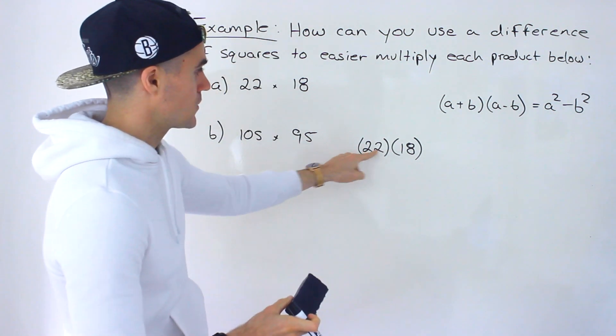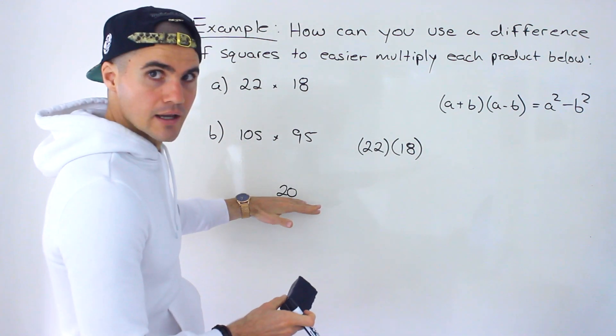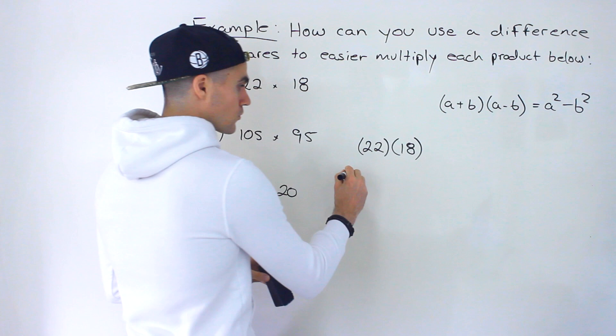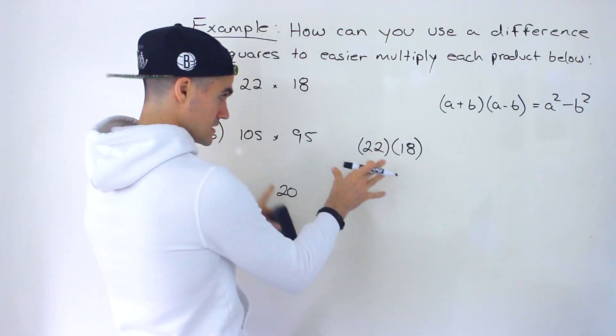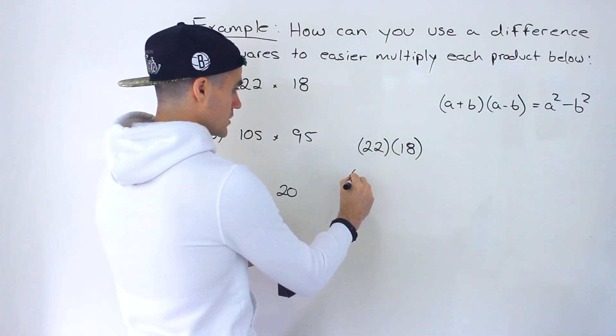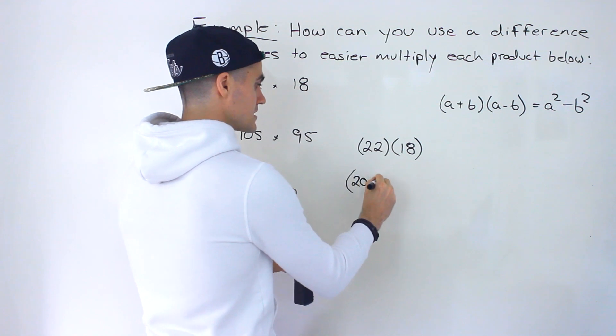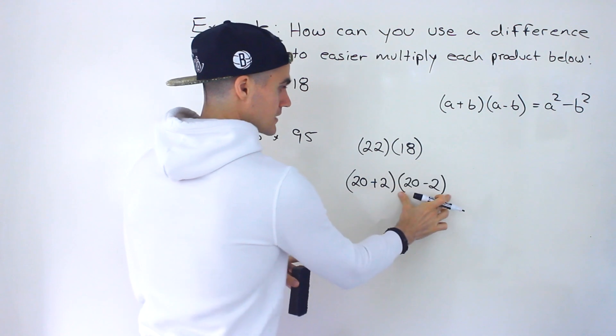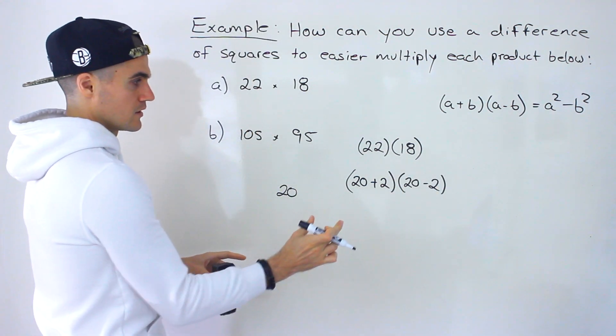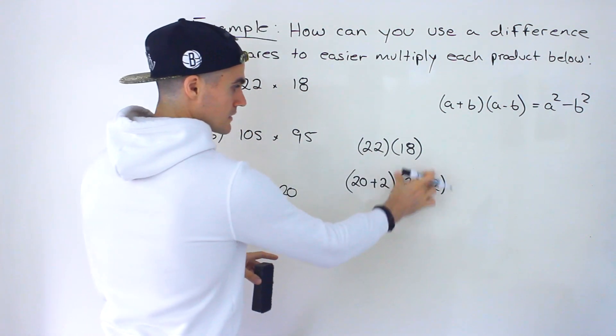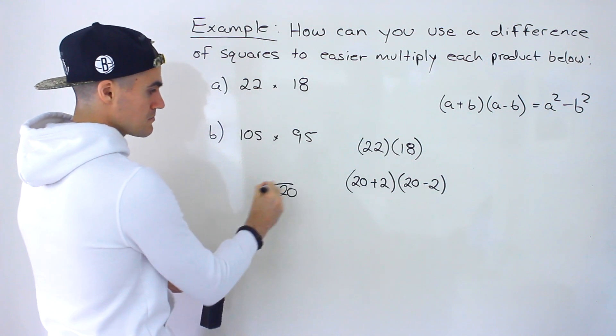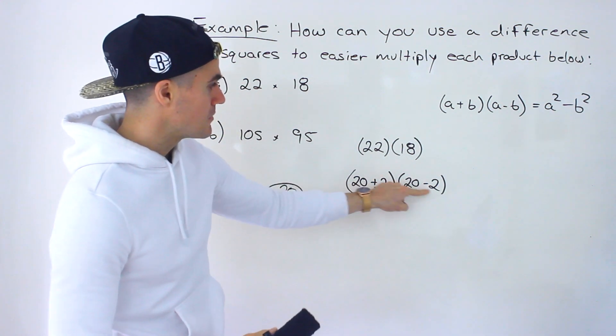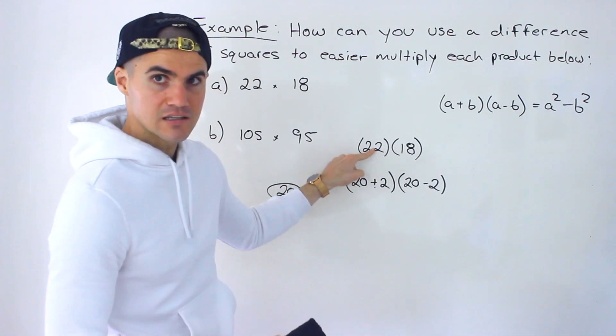This one's pretty easy to see, 22 and 18, 20 is right in the middle of them. And so what you want to do is you want to rewrite this bracket as 20 plus 2 and then 20 minus 2. This one is 20 plus 2 and then 20 minus 2. So the reason why we got this midpoint is because we're adding and subtracting the same amount to get to these values.